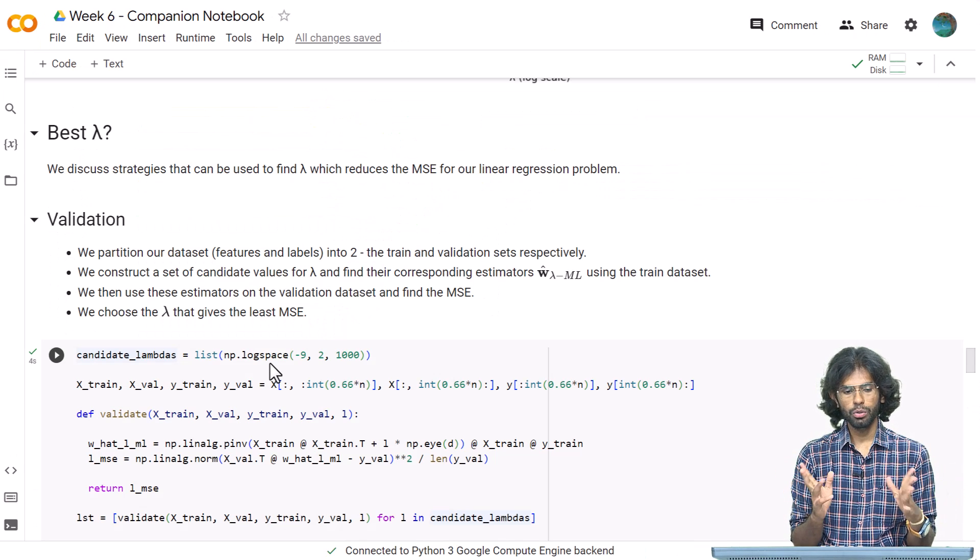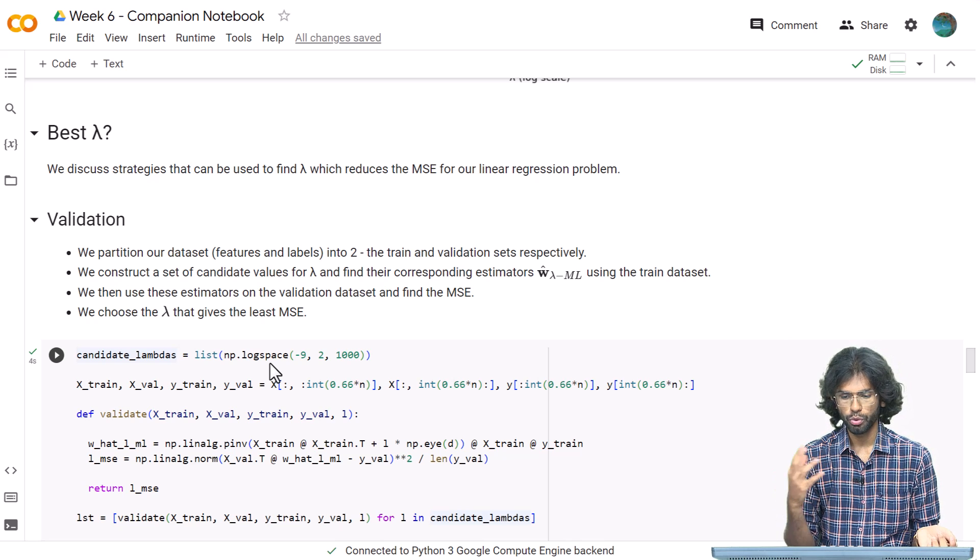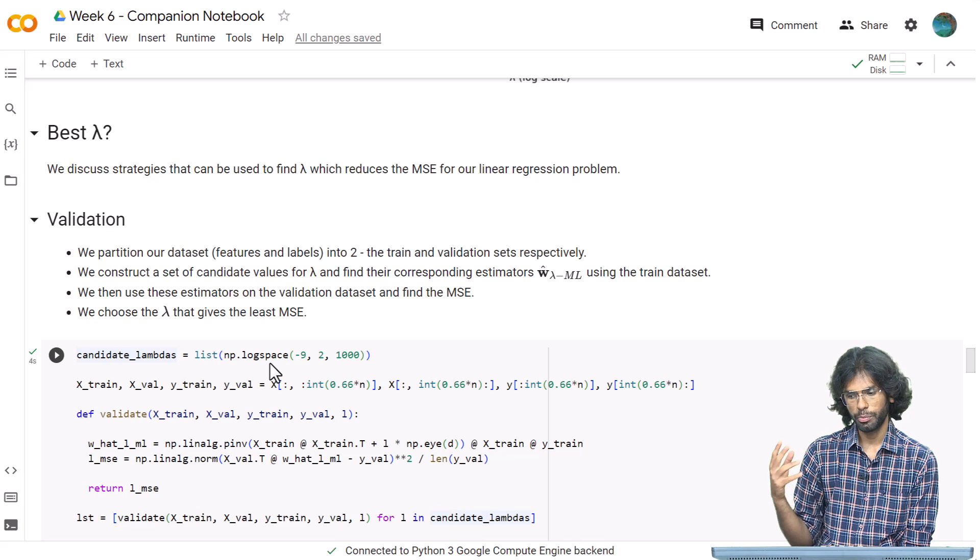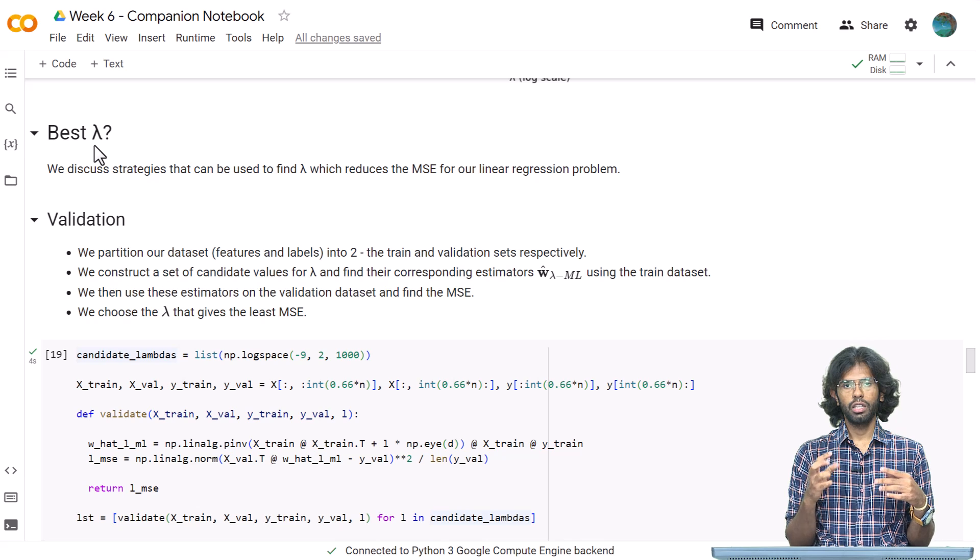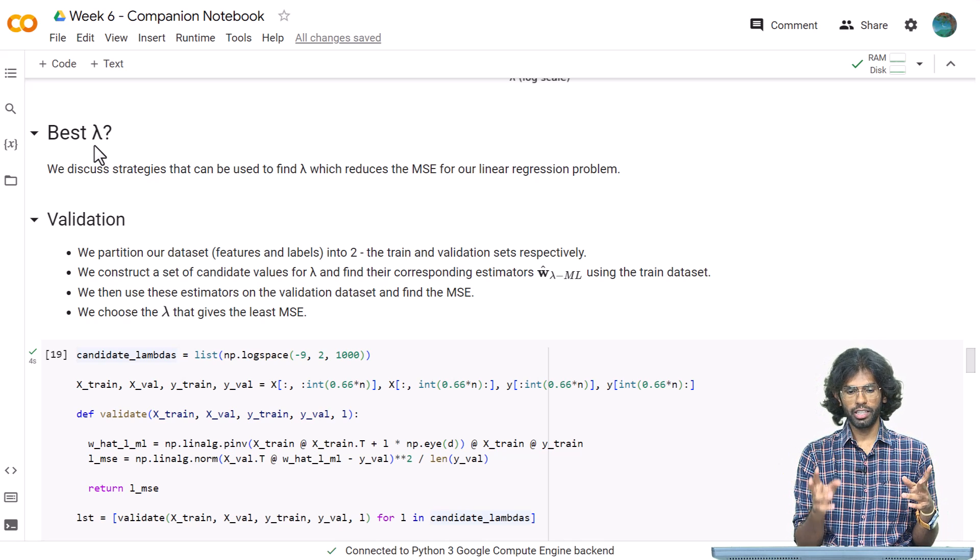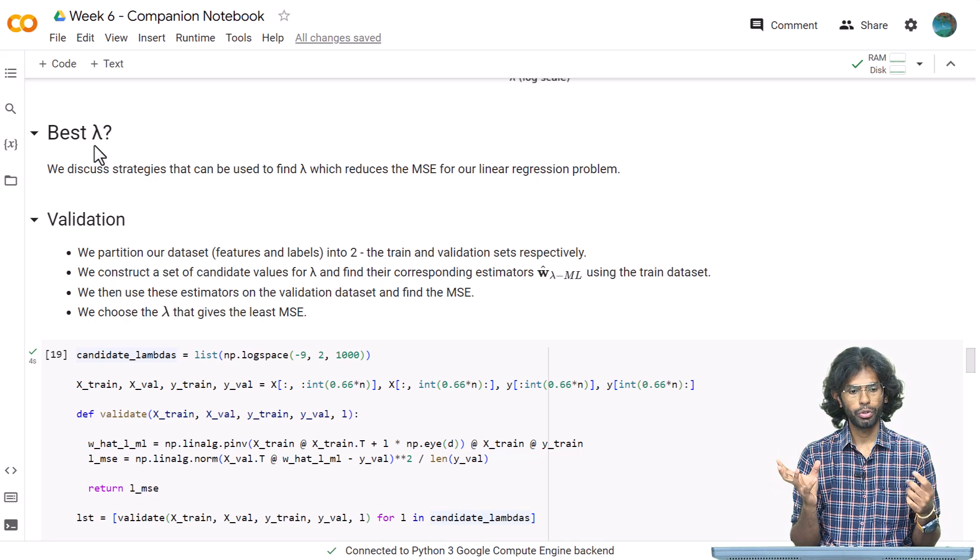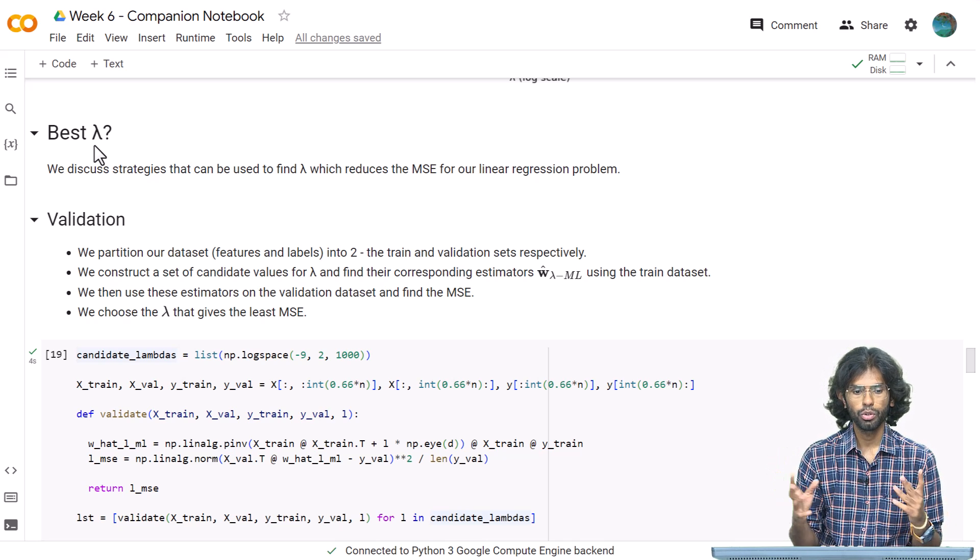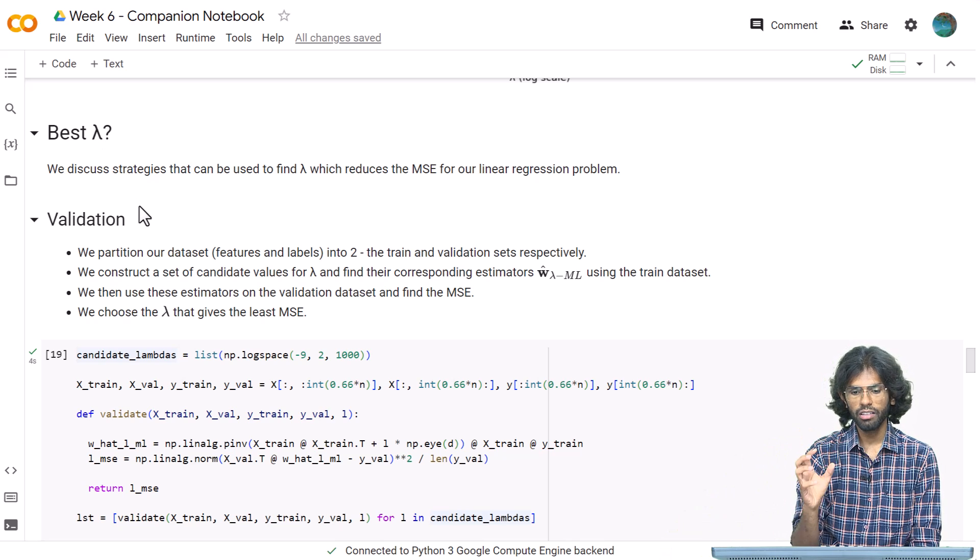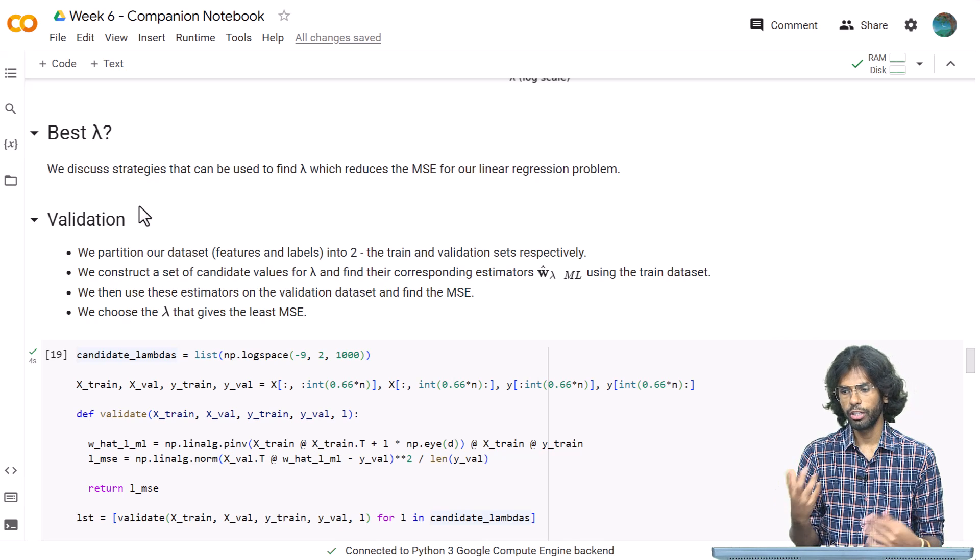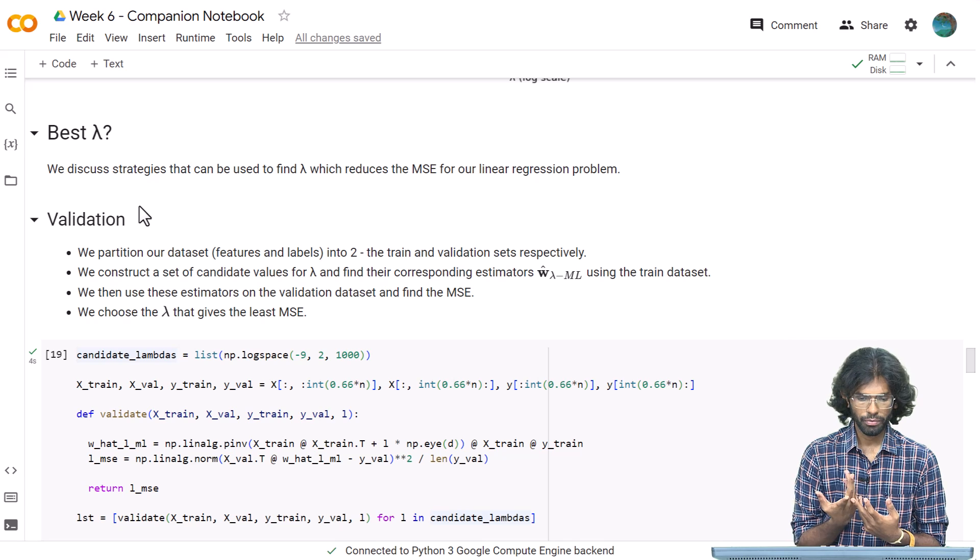We have discussed how ridge regression and lasso regression can be used to get a better approximation of our initial w. But how do we choose this hyperparameter? We know the difference between the two MSEs of our estimators depends on λ, but there is no closed-form solution to find this λ. We just know it exists. How do we find this λ? Secondly, we do not have the true value of w in our hands. If we do, there is no problem to solve in the first place. How do we do this?